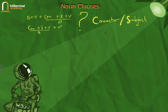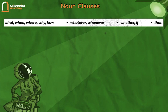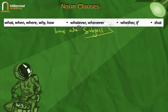First, let me show you the connectors that function as a normal connector — meaning what, when, where, why, how, whatever, whether, if, and that. All of these connectors must be followed by a subject.